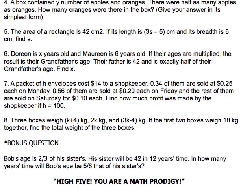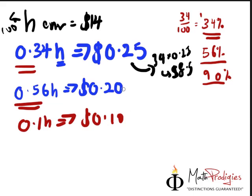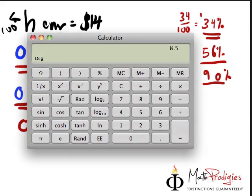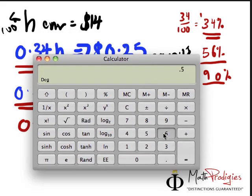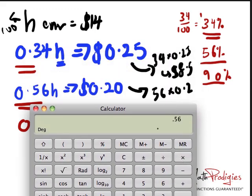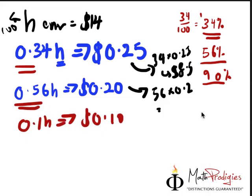The other one, 0.56 times 100 gives me 56 times 0.2, which is 1 fifth of 56. 0.2 times 56. 0.56 times 0.2 times 100. 11.20 for this.